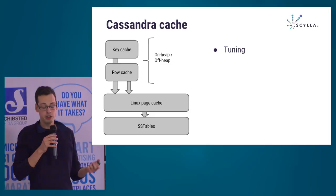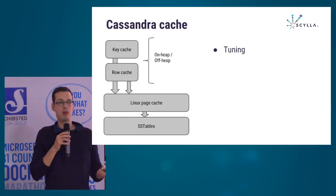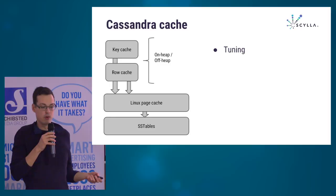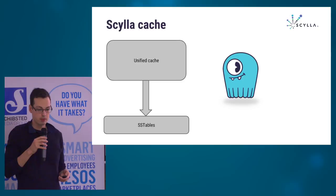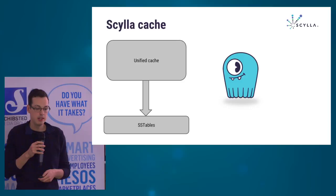Cassandra has additional caches in user mode — a key cache and a row cache, with on-heap and off-heap versions of each. This means you have to tune them all — specifying exactly the size of each cache — which is practically impossible to get right and requires a lot of work. In Scylla, everything is a unified cache that behaves similarly to Cassandra's row cache and works in tandem with the Seastar memory allocator.